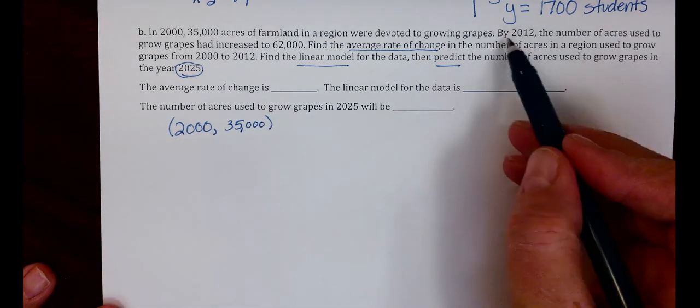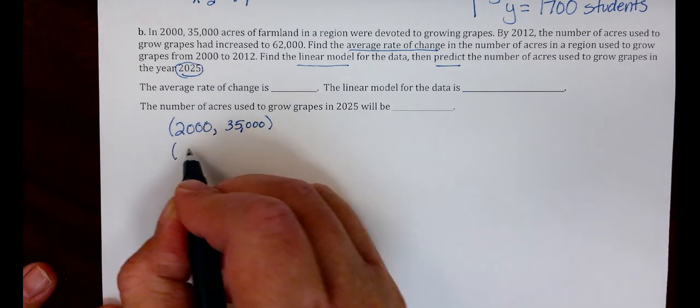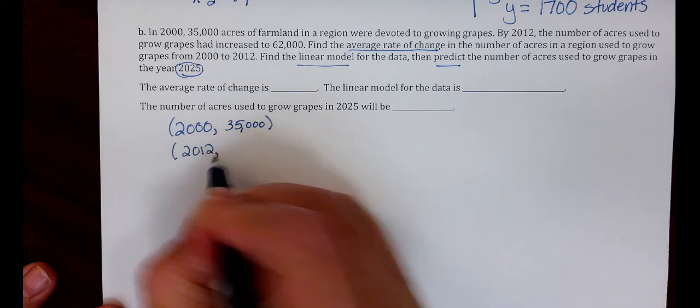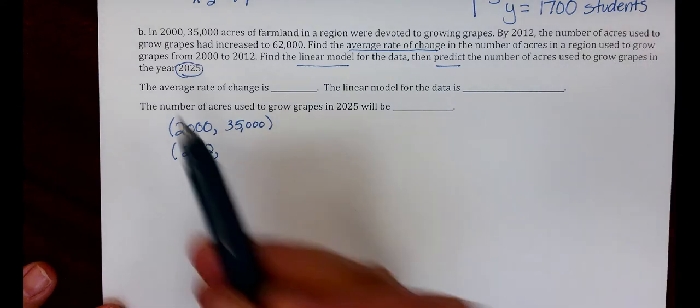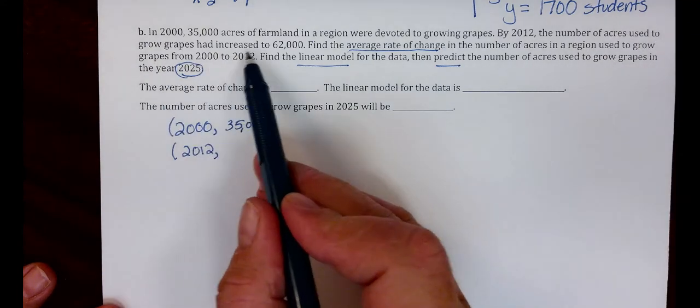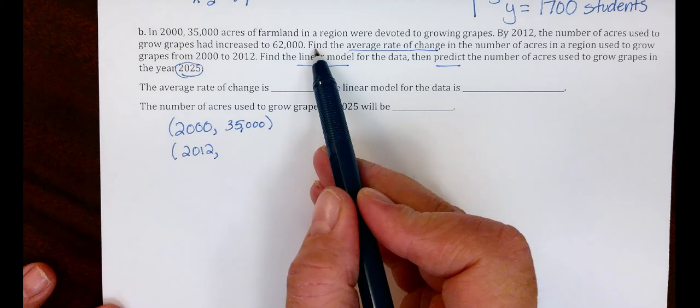In the next sentence, by 2012, X value, the number of acres used to grow grapes had increased to 62,000. That's our Y value.